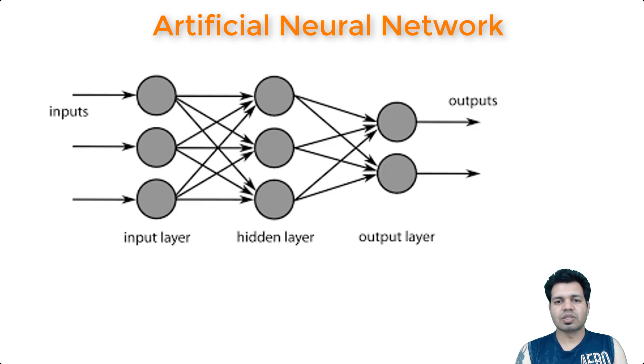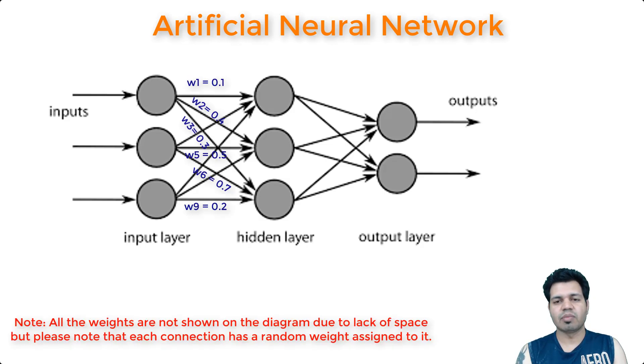Each of these connections transfers the output or the signal from the previous node to the receiving node in the next layer. Each of these connections has an assigned weight, which is a decimal number between zero and one. These weights represent the strength of connection between these nodes. When you receive the input in the input layer, then that input passes to the next node of the hidden layer using this connection. During this process, the input is multiplied with the weight assigned to the corresponding connection.